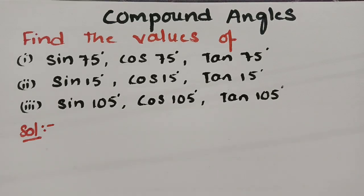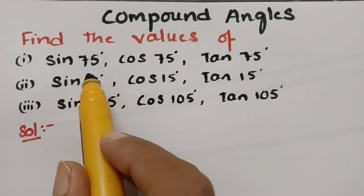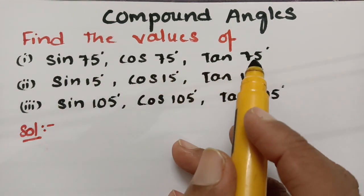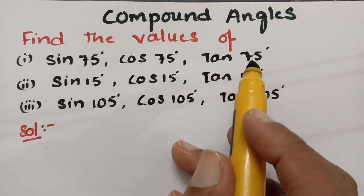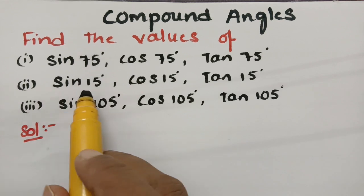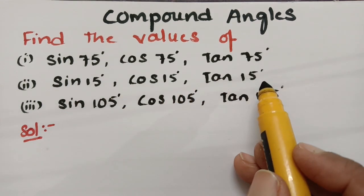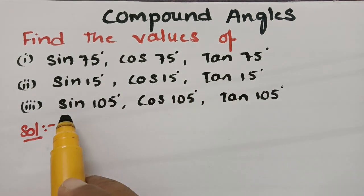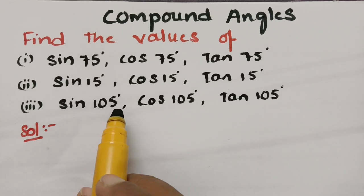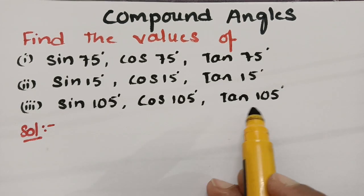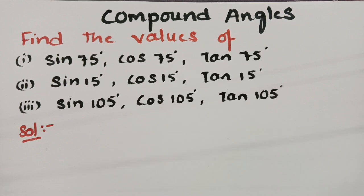Today's topic is from compound angles. In today's video, we are going to find out the values of sin 75 degrees, cos 75 degrees, tan 75 degrees. The next question is sin 15 degrees, cos 15 degrees, tan 15 degrees. And sin of 105 degrees, cos of 105 degrees and tan of 105 degrees.